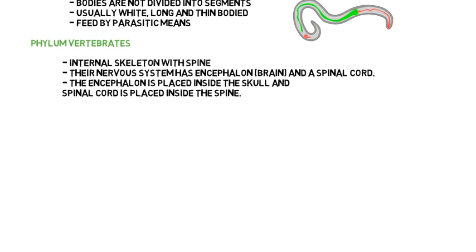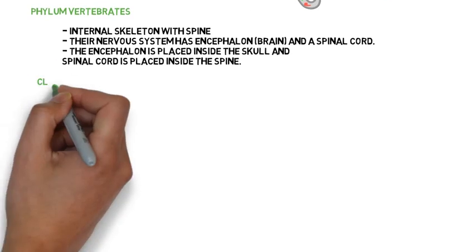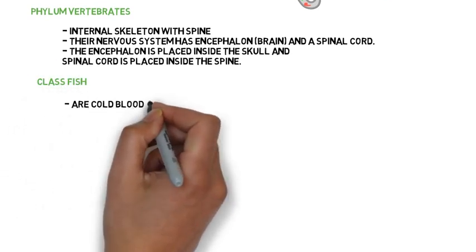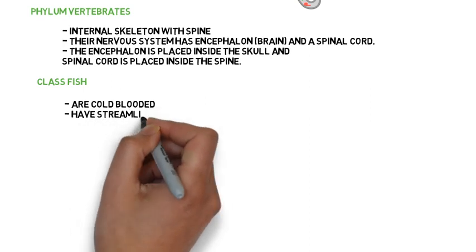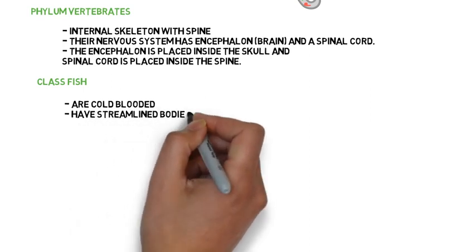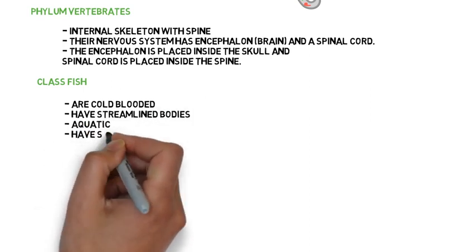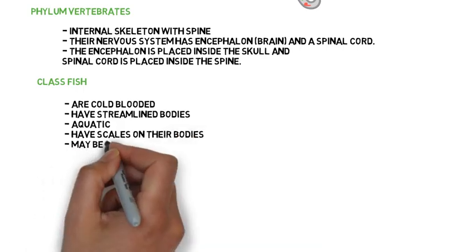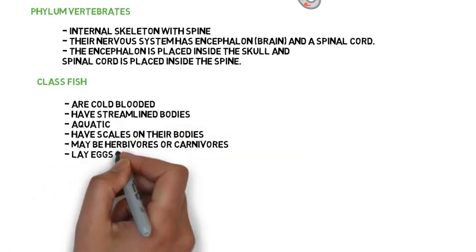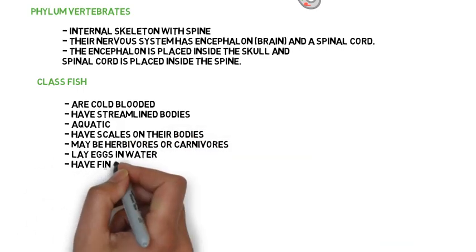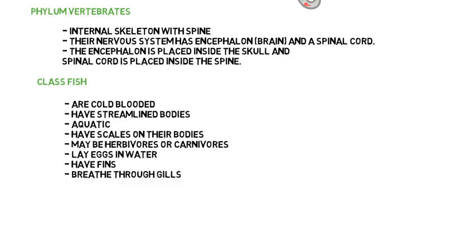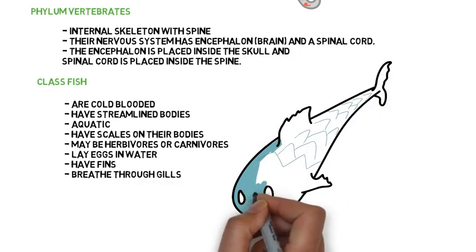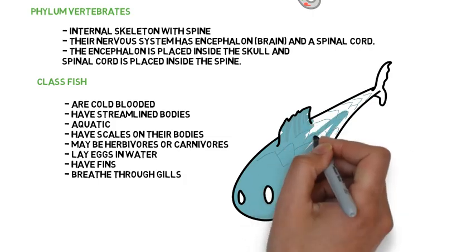Class Fish. They are cold-blooded, have streamlined bodies, are aquatic, have scales on their bodies. They may be herbivores or carnivores. They lay eggs in water. They have fins, and they breathe through their gills. Examples of fish are mackerel, pomfret, tuna, and salmon.